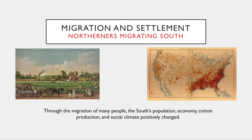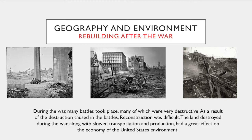Regarding geography and environment: during the war, many destructive battles took place, making Reconstruction difficult. The land destruction caused many people to reevaluate their necessities and daily routines as they helped restore the land. The destruction, along with slow transportation and production, had a great effect on the economy and environment of the United States.